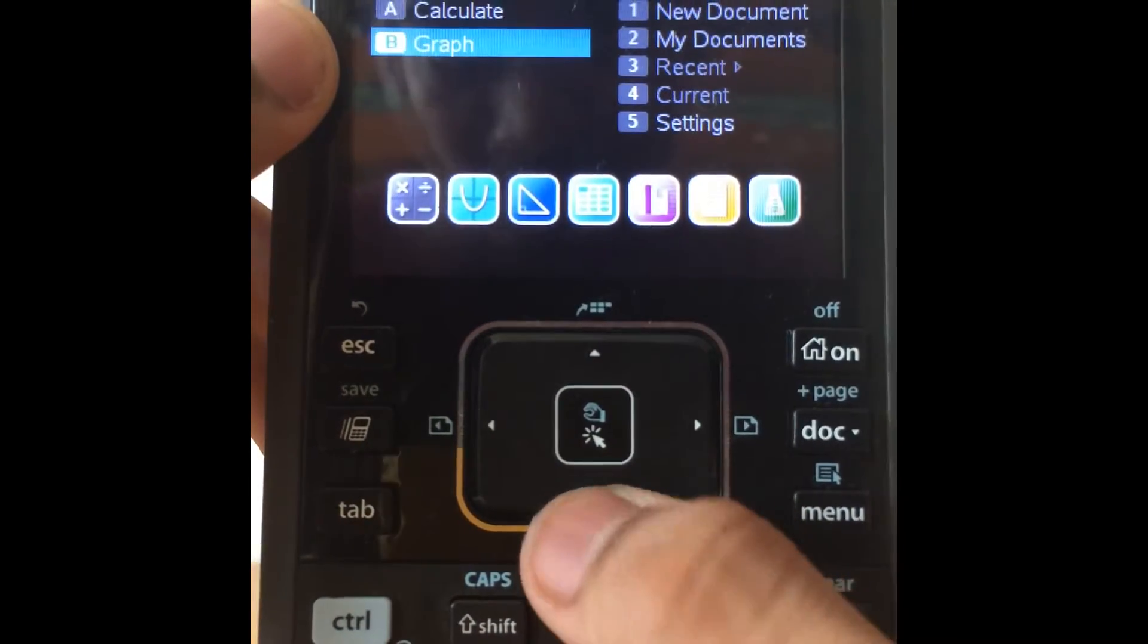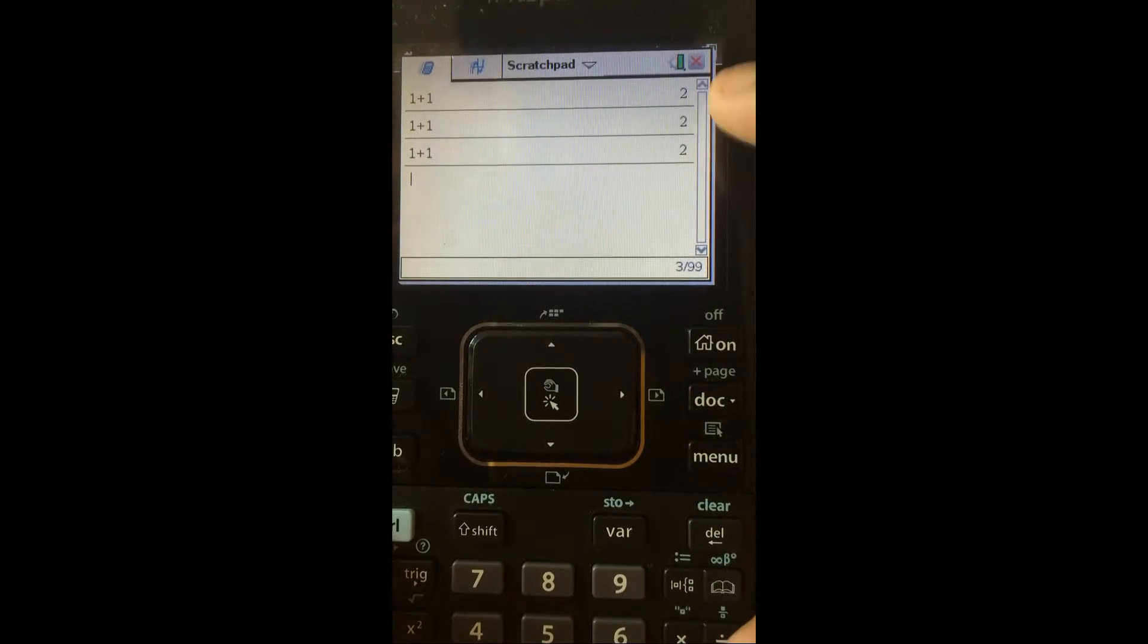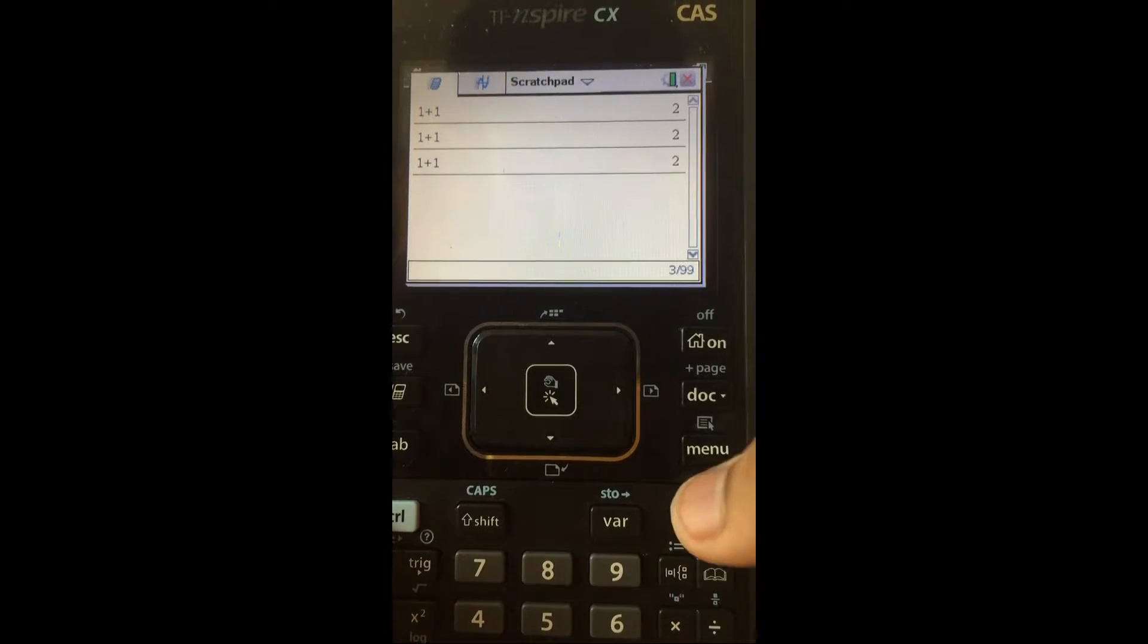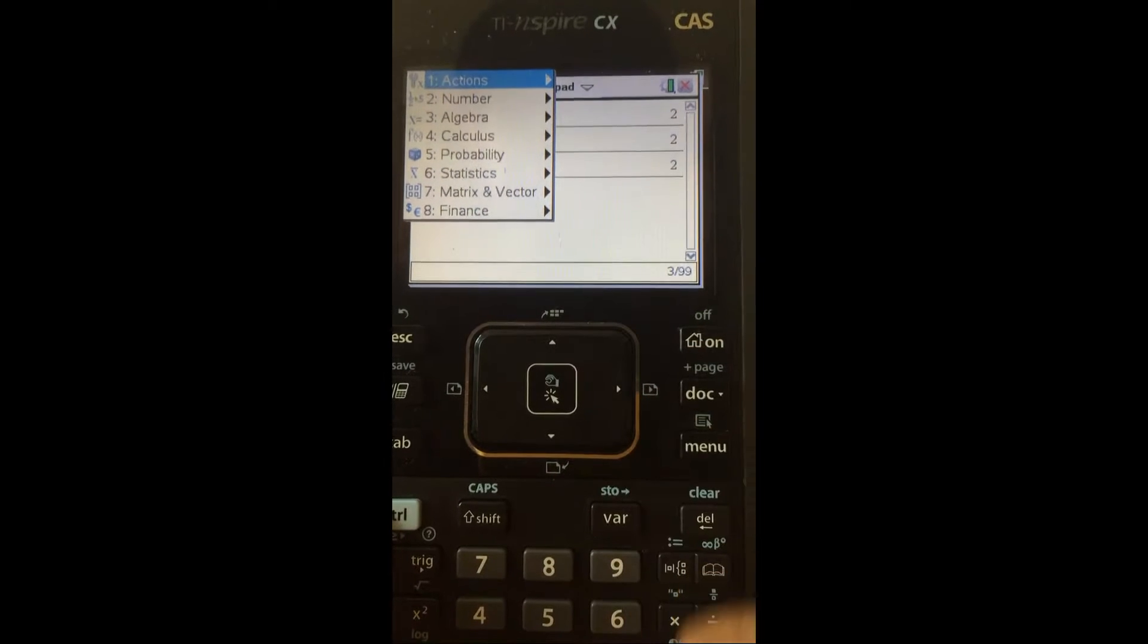If you want to do graphing instead, go to graph. If there's a mess in the calculator and you want to clean this up, press menu followed by actions and then go to clear history and press enter.